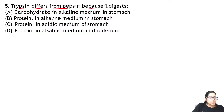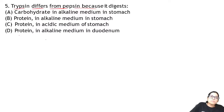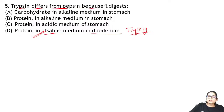Zoology Question 5: trypsin differs from pepsin because — both trypsin and pepsin digest protein, but trypsin works in an alkaline medium in the duodenum, while pepsin works in an acidic medium in the stomach.